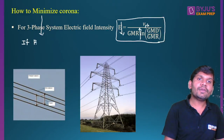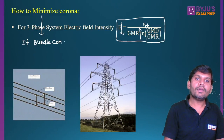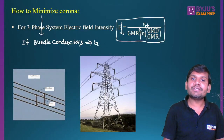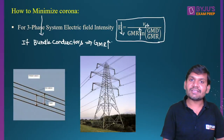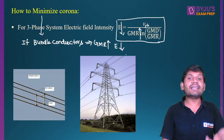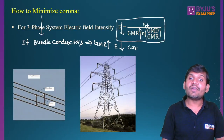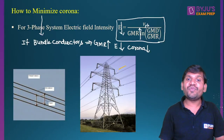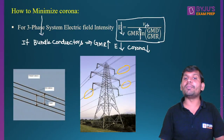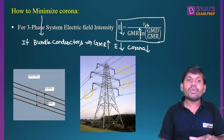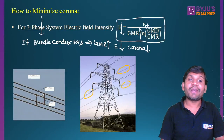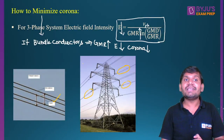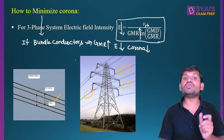If bundle conductors are used, the GMR (geometric mean radius) is increased. When the GMR is increased, the electric field intensity is reduced. When the electric field intensity is reduced, the corona effect is reduced. Bundle conductors means per phase we are using more number of conductors. Here we are using four conductors per phase, and these conductors are separated by using a spacer — which is a metal link. By using the spacer, we separate the conductors. In this way, we can minimize the corona effect.